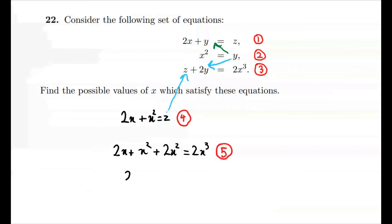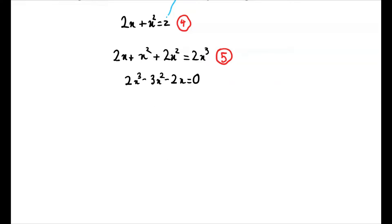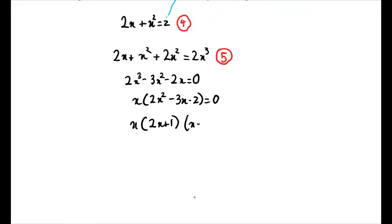Rearranging gives us 2x³ − 3x² − 2x = 0, and we can factorize this to get x(2x + 1)(x − 2) = 0. This gives us the three solutions x = 0, x = −½, or x = 2, and this is our final answer.